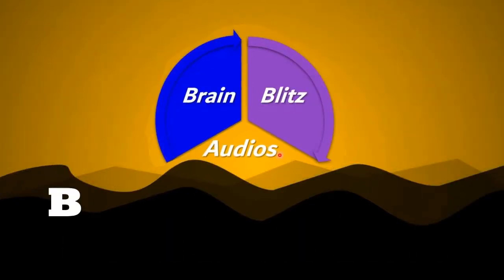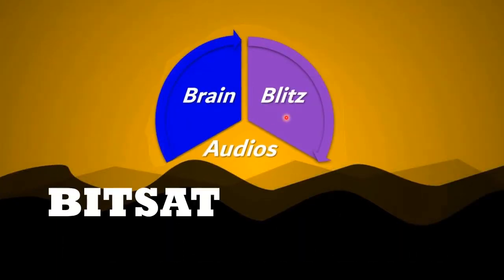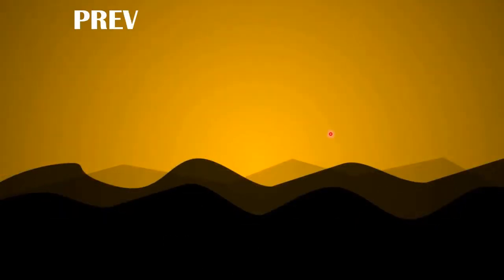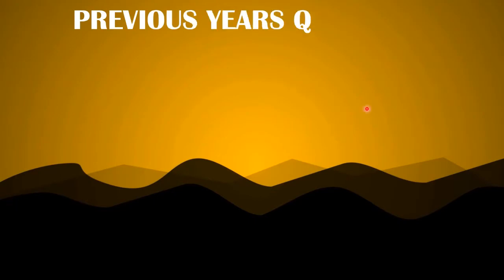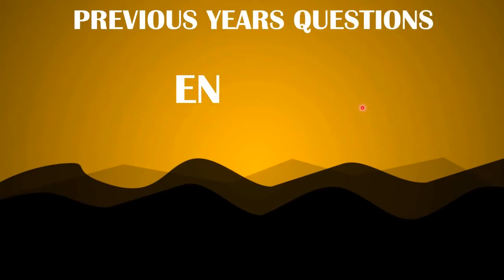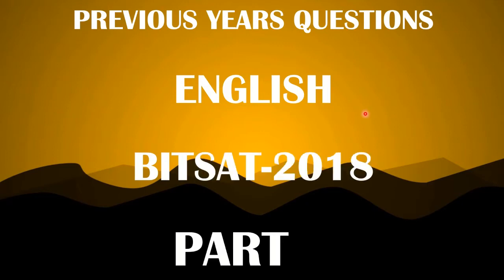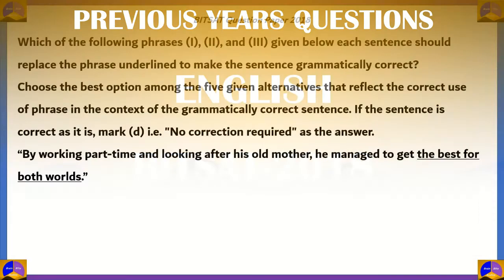Hello everyone, welcome to BrainBlitz Audios. Today in this episode of BITSAT practice, we're going to be looking at some questions of the subject English which were asked in BITSAT 2018. There are a total of 15 questions of English — some of them have to do with words, others have to do with passages. We're going to be looking at some of both types of questions in detail.